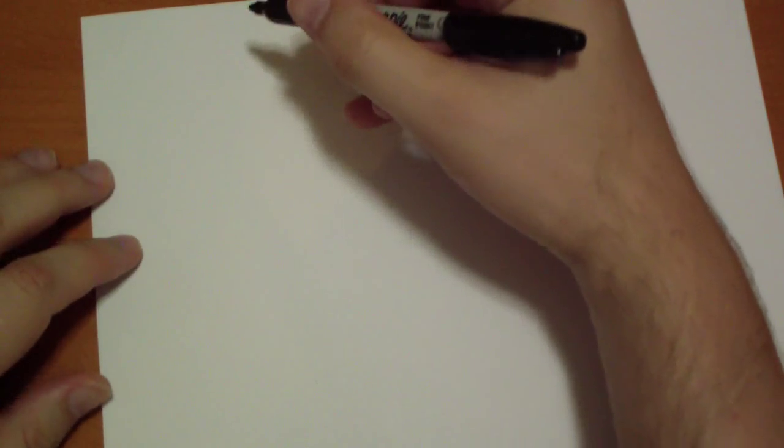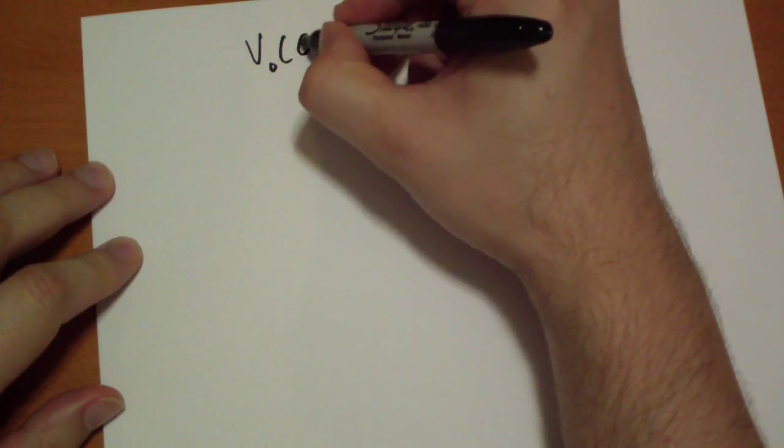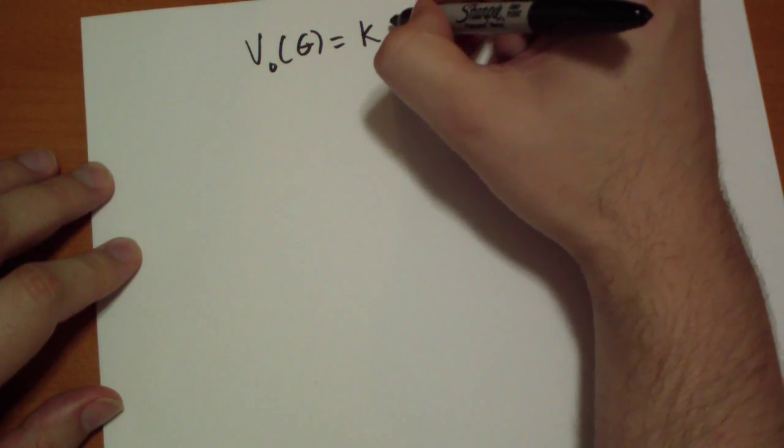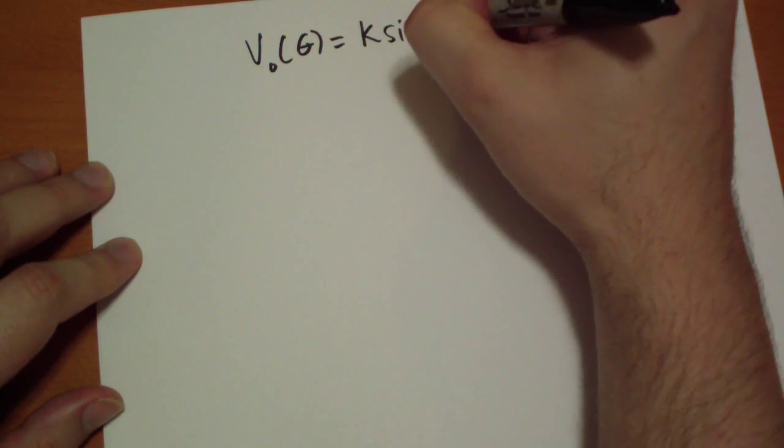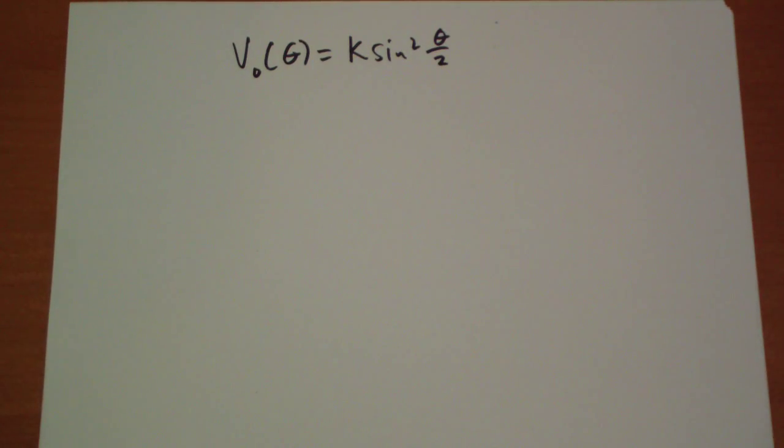So for instance, let's say that we're given the potential is v_0 of theta is just k sine squared theta over 2, where k is some constant of course.